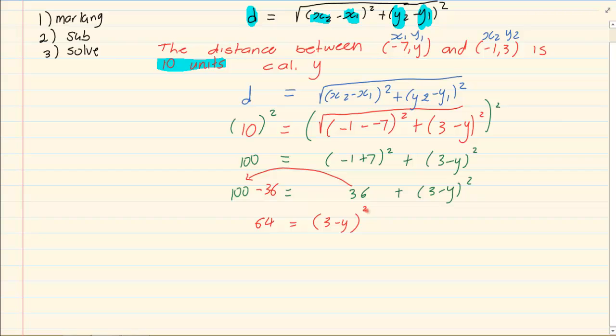Now to get rid of a square you are going to root. Remember math is all about opposites. So if it is a square I am going to square root. We now have 3 minus y equals 8.